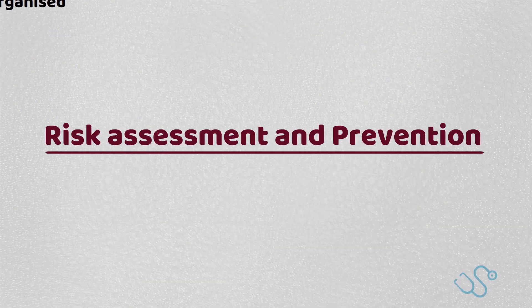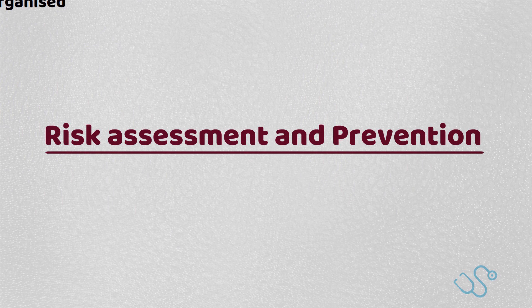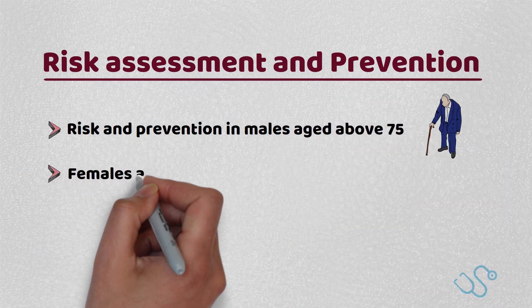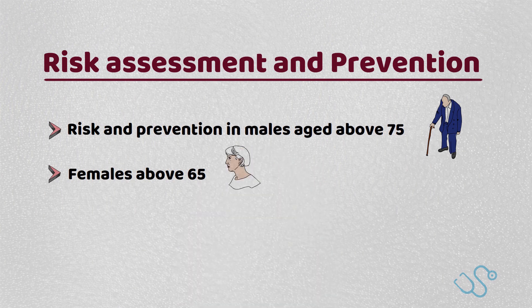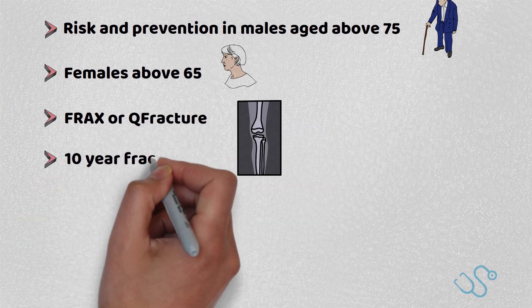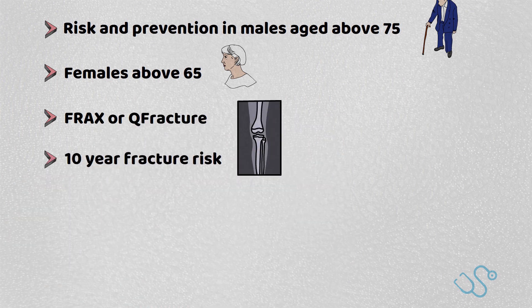What about risk assessing and preventing osteoporosis? If a patient has not had a fragility fracture, NICE recommends assessment of osteoporosis and risk prevention in males above 75 and in females above 65. Younger patients with some of the aforementioned risks should also be considered. NICE recommend the usage of a FRAX or a Q-fracture, both of which give you a 10-year fracture risk in patients aged between 40 and 90, taking into account their demographics, risk factors, and with the option to add in DEXA values.